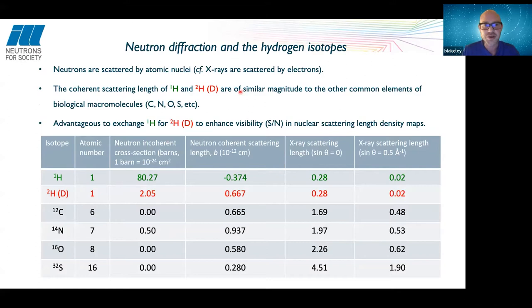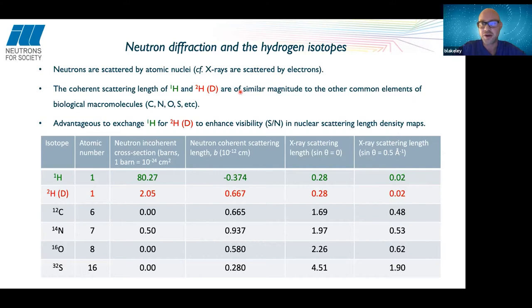Neutrons are really the only technique that can provide the positions of hydrogen atoms and protons in a biological molecule at room temperature. Neutrons are scattered by atomic nuclei, rather than — as with X-rays — by electron clouds. X-ray scattering strength is proportional to the number of electrons, whereas with neutrons the scattering strengths show no correlation to electron number. Hydrogen, with only one electron, scatters X-rays very weakly, making it very difficult to determine hydrogen positions.